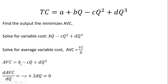Now to find the output that minimizes average variable cost, we're going to take the derivative of the average variable cost equation and set that result equal to zero. Any time you're finding a maximum or a minimum, we take a derivative and set that derivative result equal to zero.